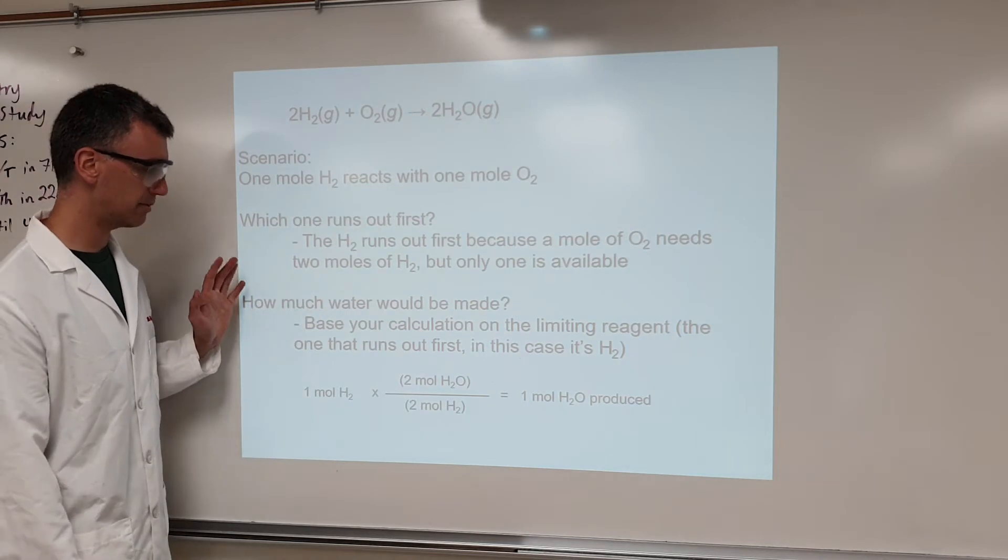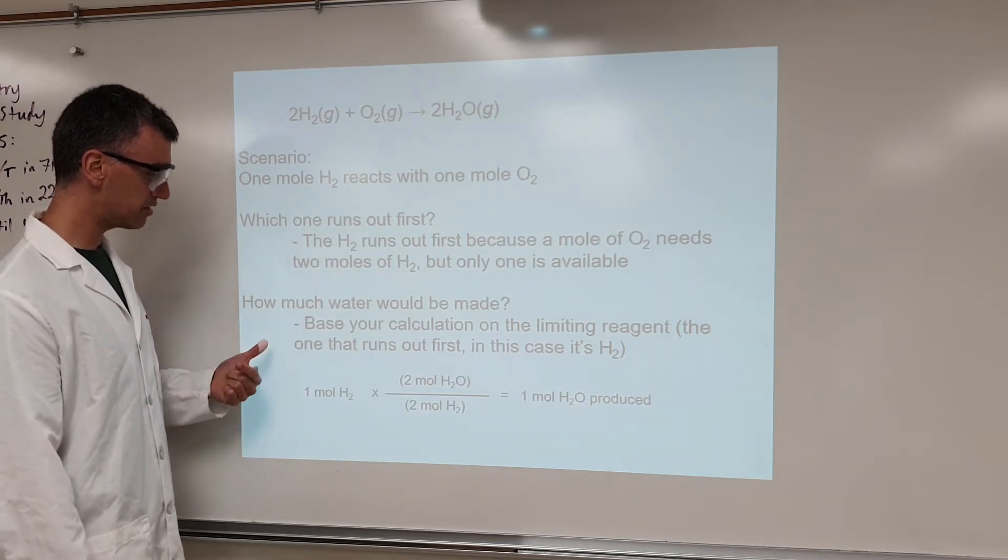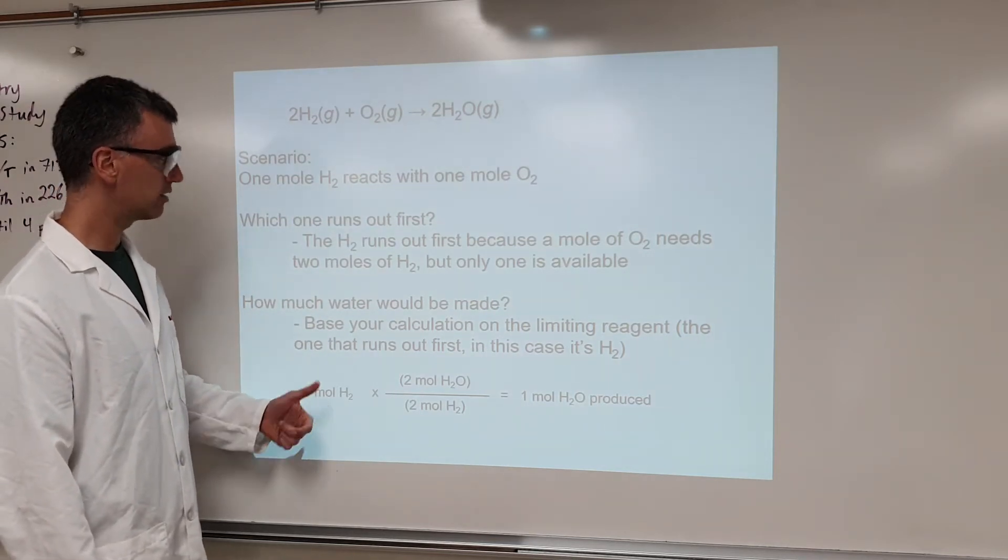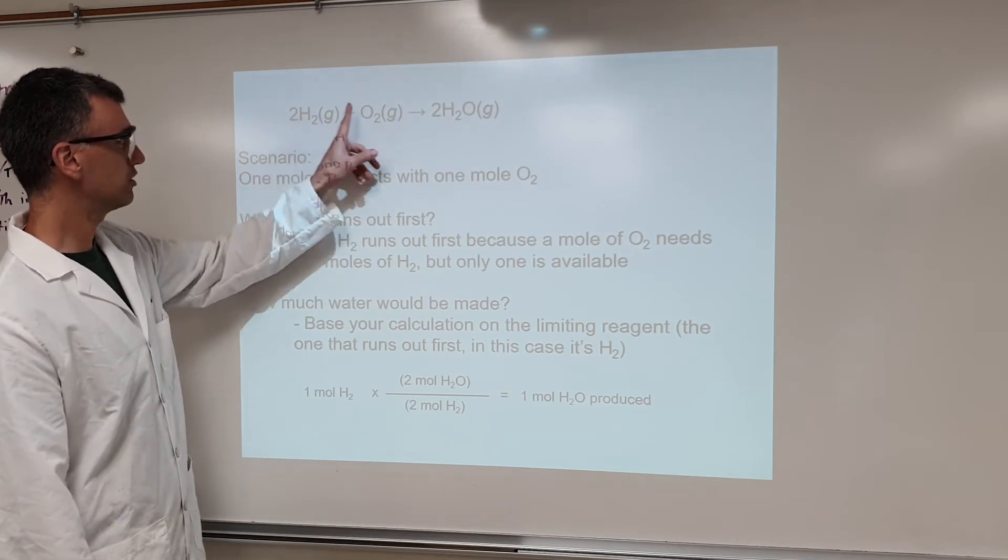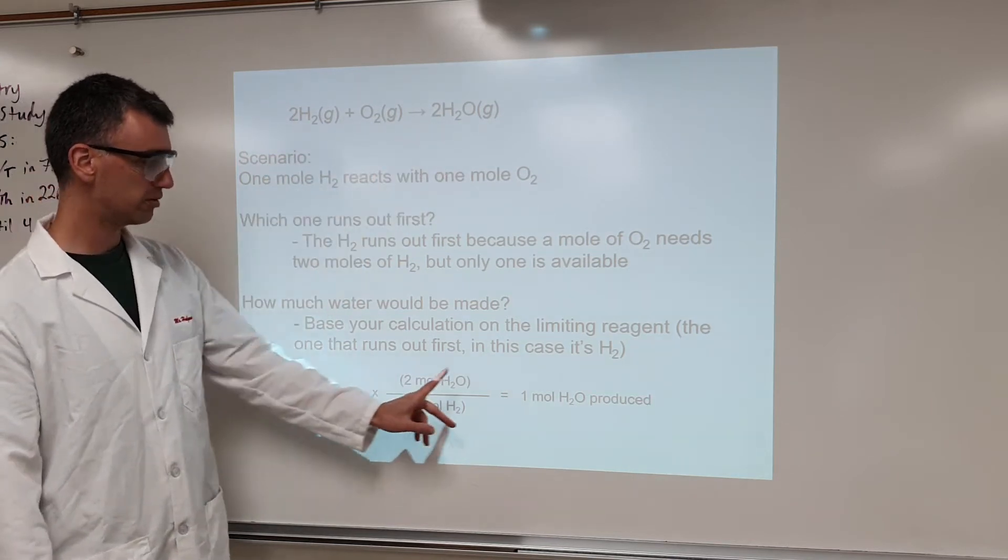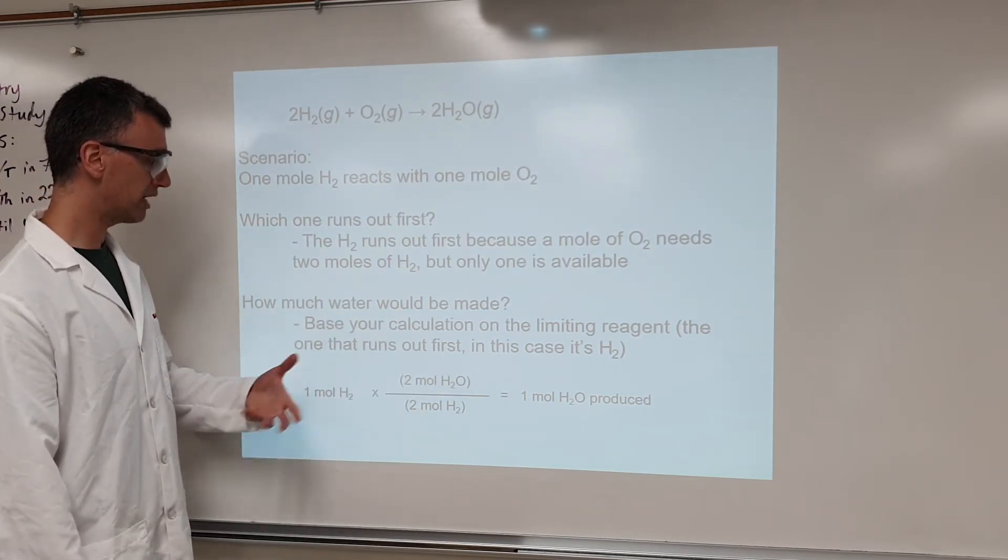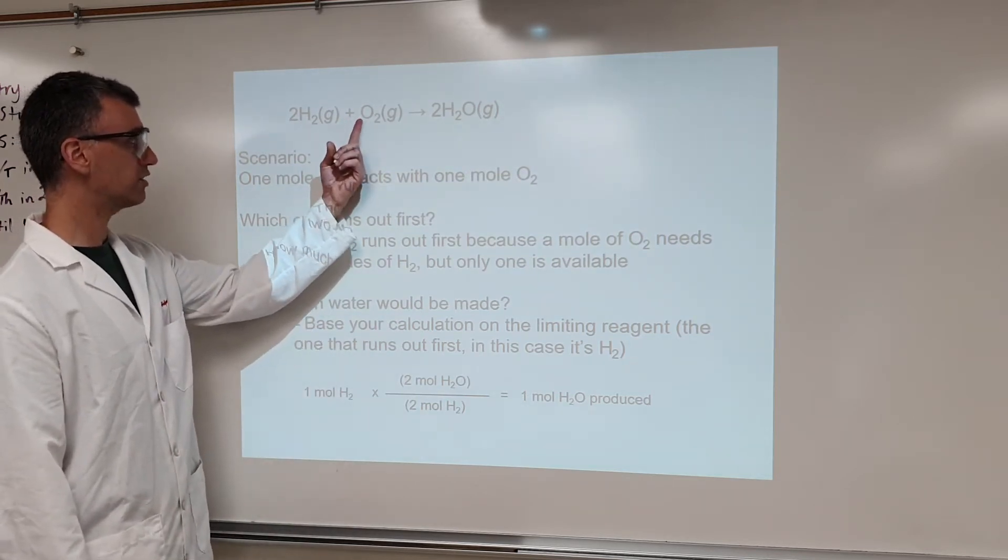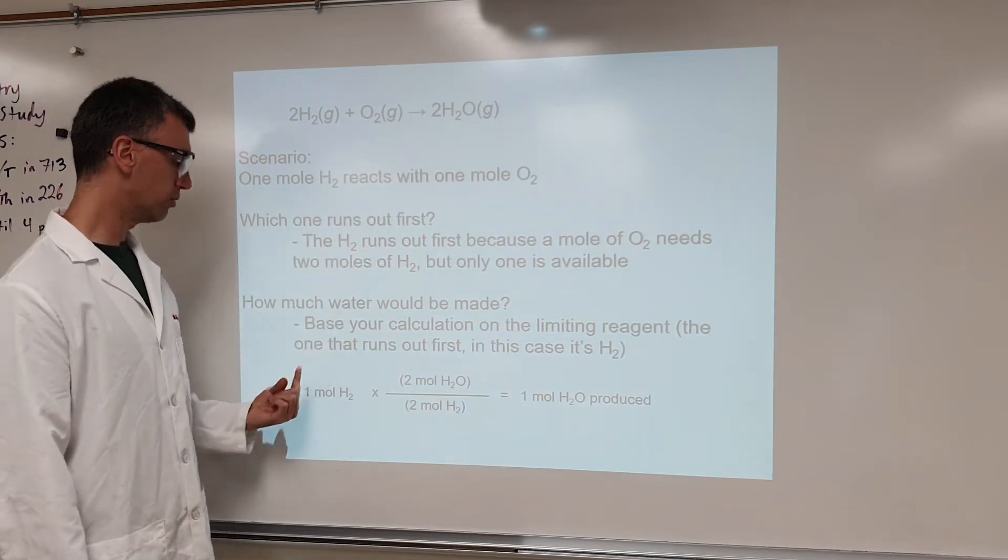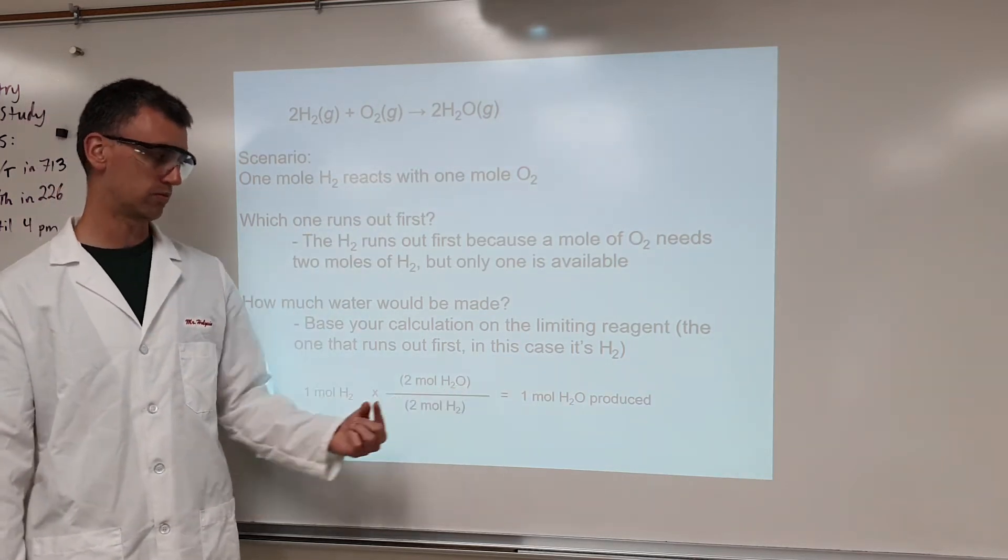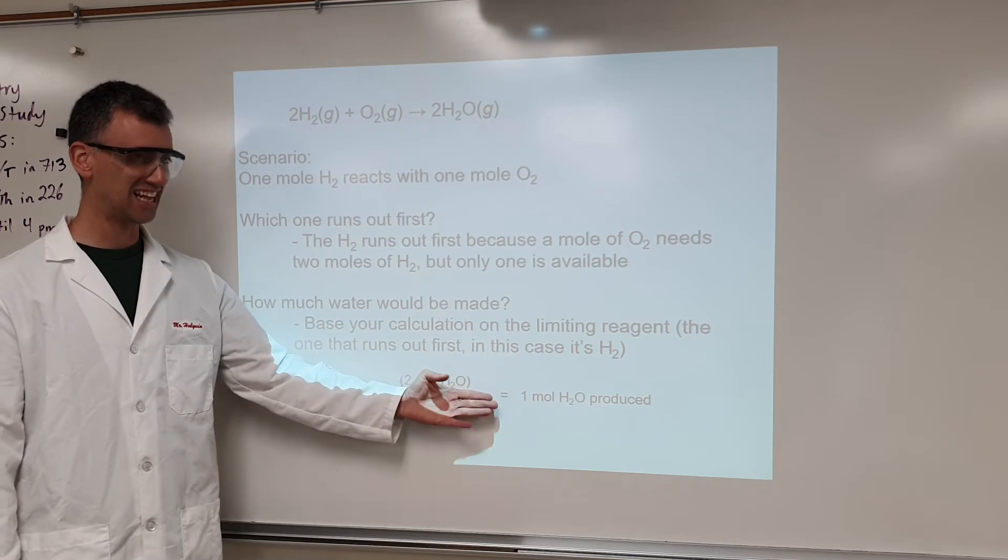And the idea here is, you can calculate that if you had 2 moles of hydrogen, you would make 2 moles of water, whereas if you had only 1 mole of hydrogen, you would make only 1 mole of water. It becomes your limiting reactant, because 1 mole of oxygen is enough to make 2 moles of water, but 1 mole of hydrogen is only enough to make 1 mole of water. So your limiting reactant will make less product.